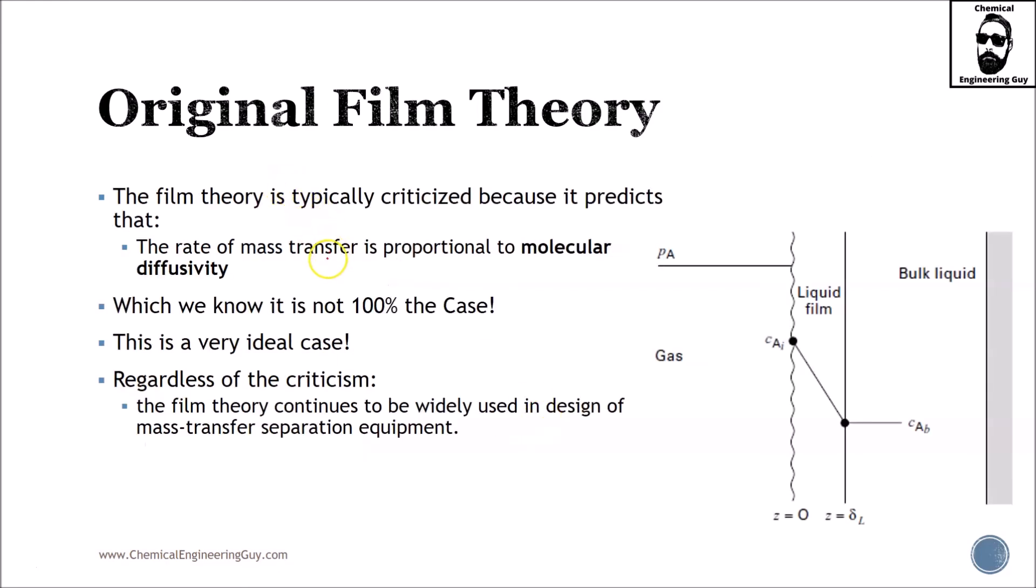The film theory is typically criticized because it predicts that the rate of mass transfer is proportional to molecular diffusivity. Because we're ignoring the gas part, this is not entirely the case. This is a very theoretical ideal case, true only at very low flow rates with no turbulence.